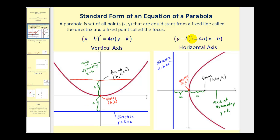If the y part of the equation is squared, we will have a horizontal axis or line of symmetry. The vertex is still h, k and the value of a will tell us the distance from the vertex to the focus as well as the distance from the vertex to the directrix. The latus rectum with length 4a applies here as well. When we have a vertical axis, we add and subtract a from the y coordinate of the vertex to determine the focus and the directrix. While if we have a horizontal axis, we add and subtract a from the x coordinate of the vertex.